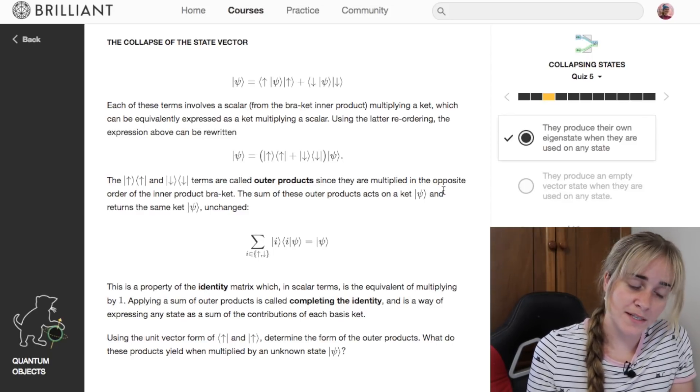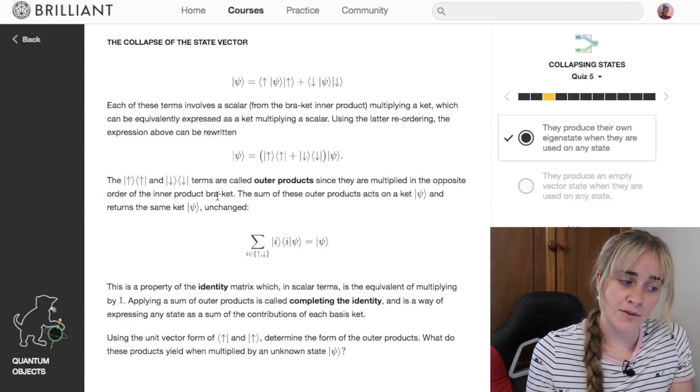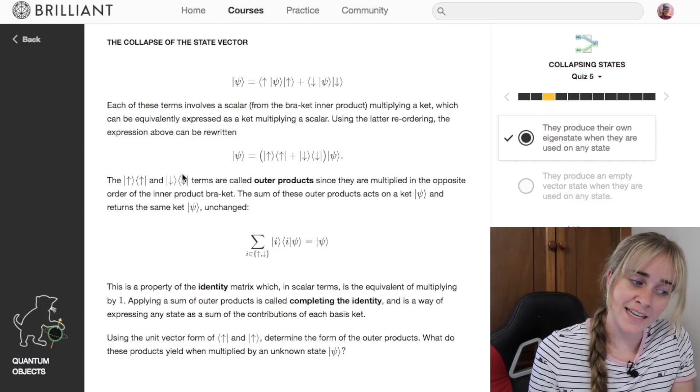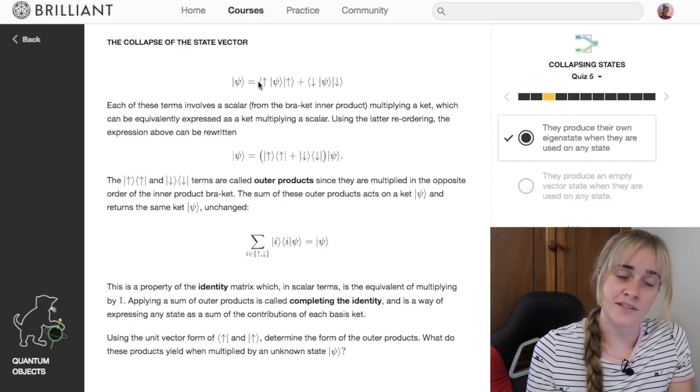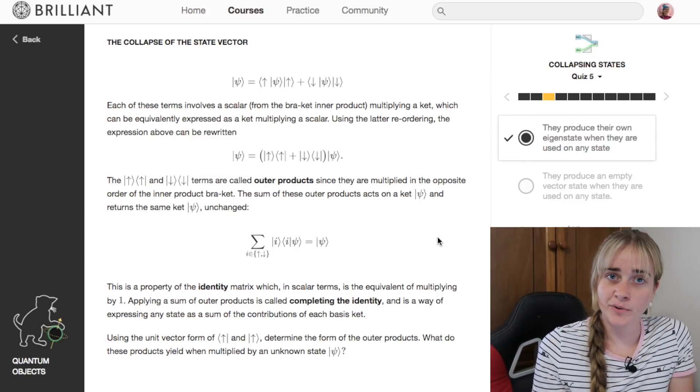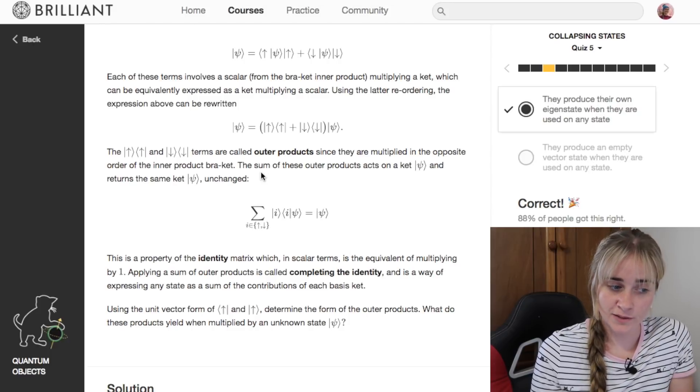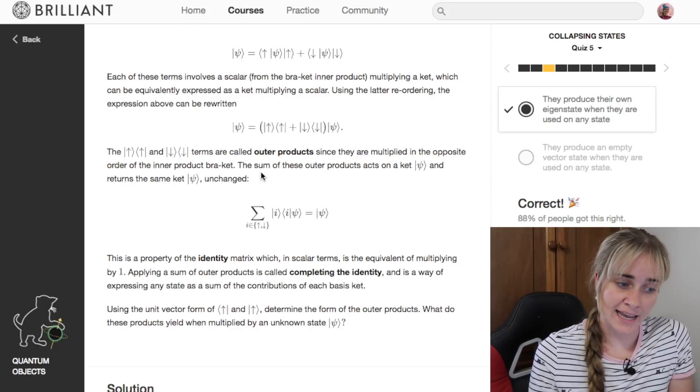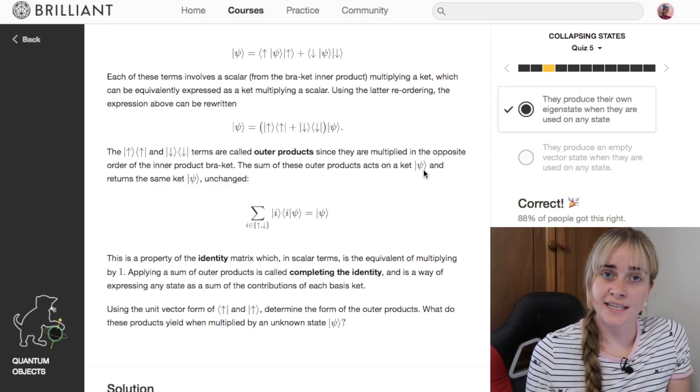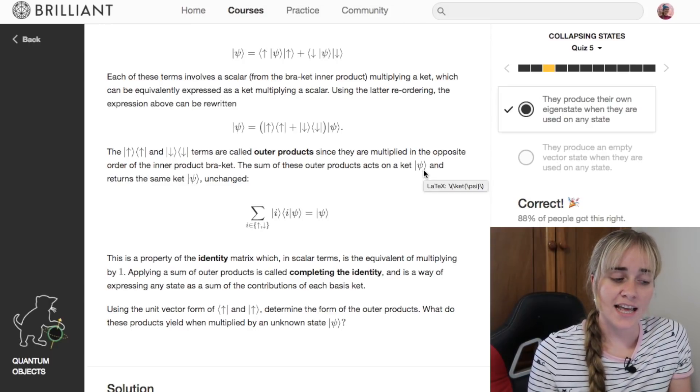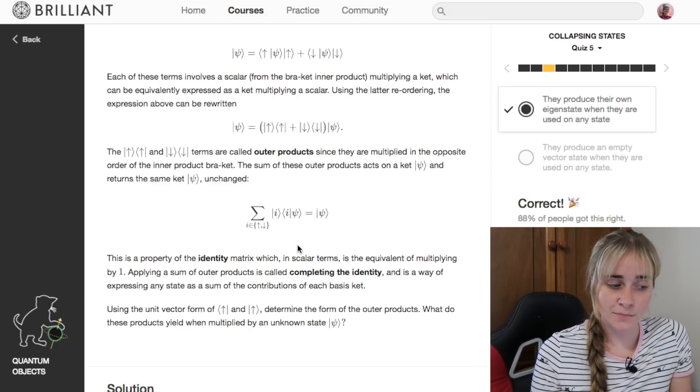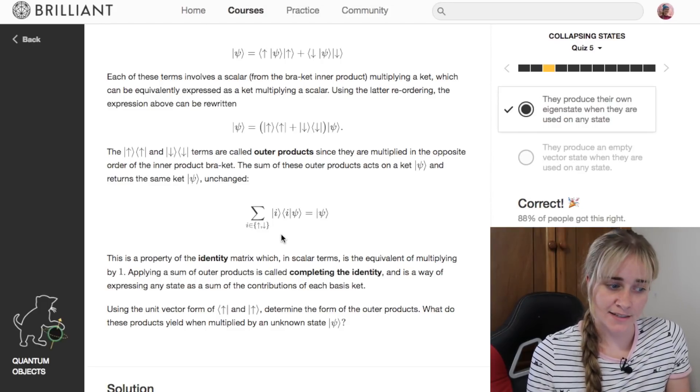They are multiplied in the opposite order of the inner products, so you might recognize that they look a bit funny compared to what we're used to dealing with. These outer products can be quite useful, and in fact if you have the sum of outer products acting on a ket, it returns the exact same ket unchanged.